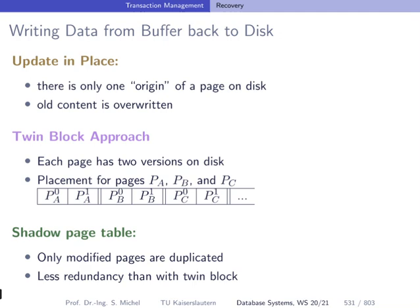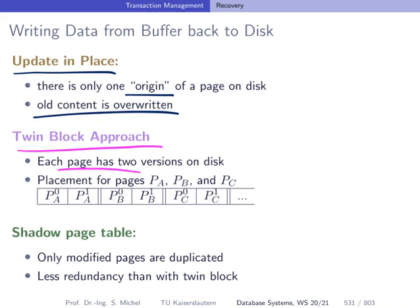A brief note on how we write data from buffer back to disk: one strategy is called 'update in place,' meaning there is only one copy of a page on disk and the old content is overwritten when writing back from the buffer. There is also an approach called the 'twin block approach,' where every page has two versions on disk — an old one and a new one — and we swap between these versions, always overriding the older version and calling the just-written one the most recent. This has benefits over update in place, since an incomplete write won't destroy the original page.